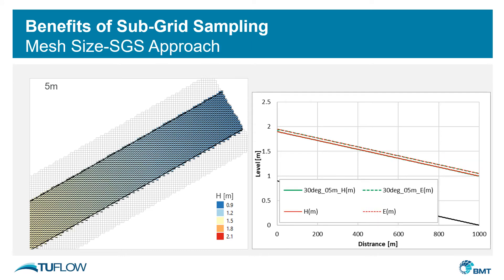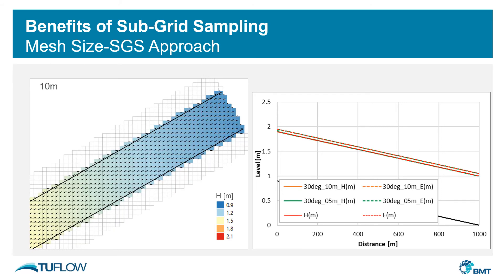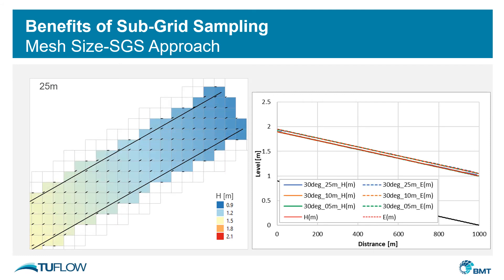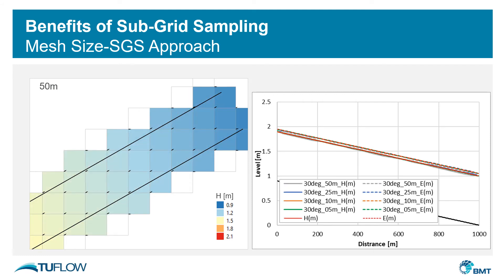With subgrid sampling we better represent the wet-dry boundary, and if we start with a fine cell size we match theoretically expected outputs. As we coarsen the cell size we still get a very good match even at a 50-meter cell size, and the reason for this is subgrid sampling.